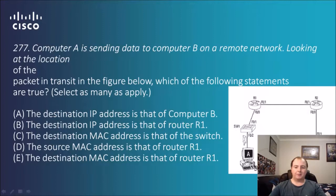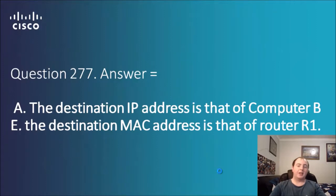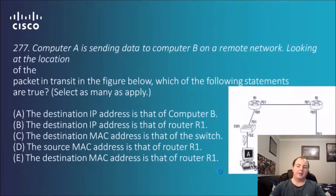The destination IP address is that of Computer B — A is sending a message, B is the recipient, so they are the destination. The destination IP address is not that of Router 1. The destination MAC address is not that of the switch. The source MAC address is that of Router 1 — that's a possibility. The destination MAC address is that of Router 1. So the answers are A and E: the source and destination MAC addresses can change for routers in between sending and receiving messages, and Computer B being the destination address makes that true.